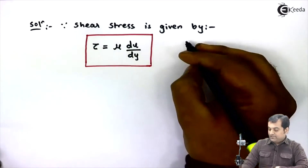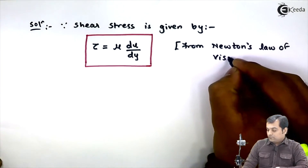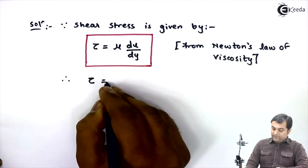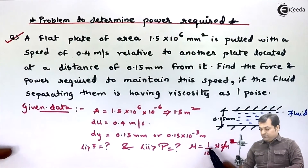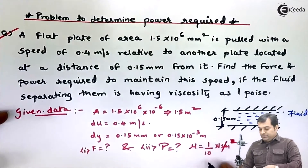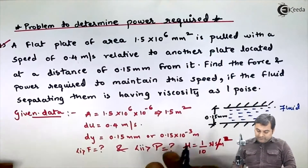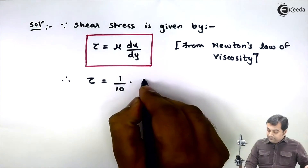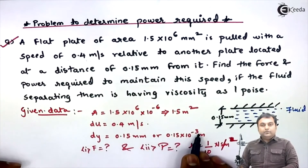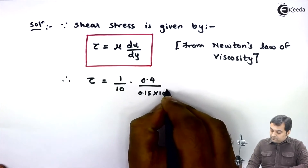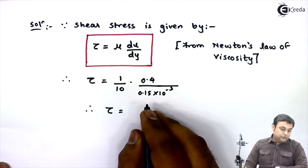This relation is from Newton's law of viscosity. Therefore shear stress = mu × (du/dy) = (1/10) × (0.4 / (0.15×10⁻³)). Computing this gives a shear stress value of 266.67 N/m².